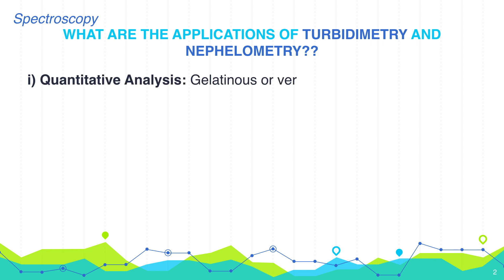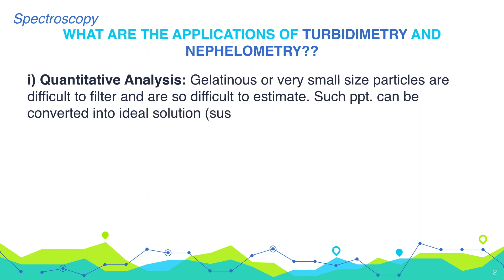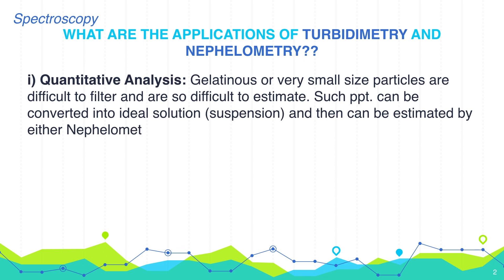Gelatinous or very small size particles are difficult to filter and are so difficult to estimate. Such precipitate can be converted into ideal solutions or suspensions and then can be easily estimated by either nephelometry or turbidimetry.